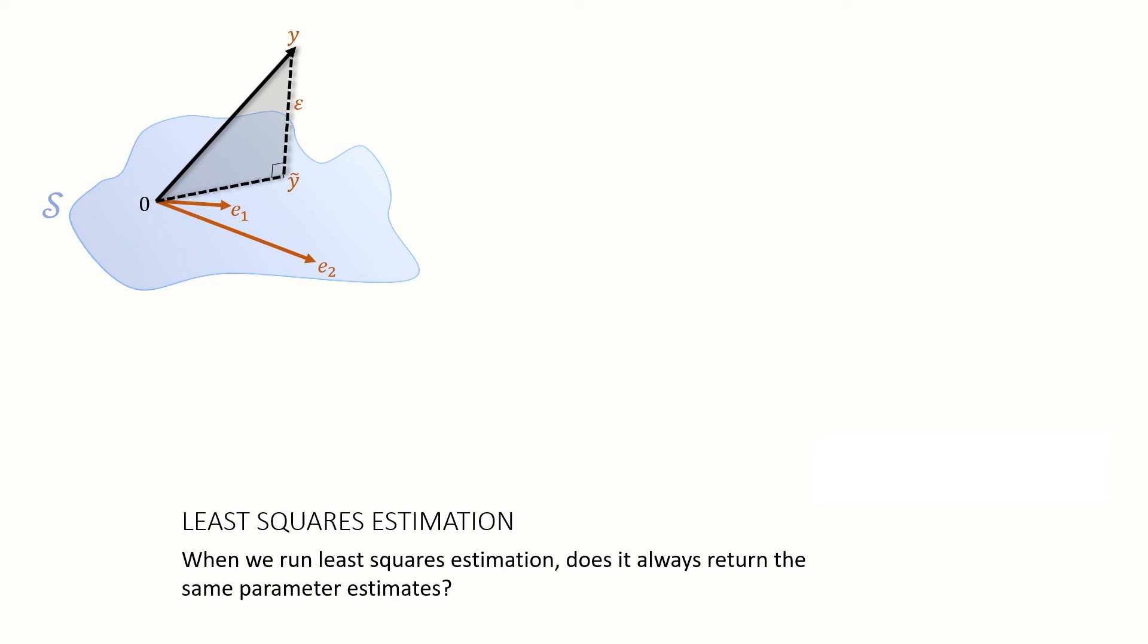In least squares estimation there's a question we haven't discussed yet but it's really important if you ever want to report your results. When we run least squares estimation does it always return the same parameter estimates?